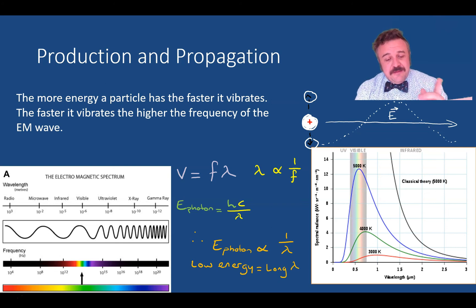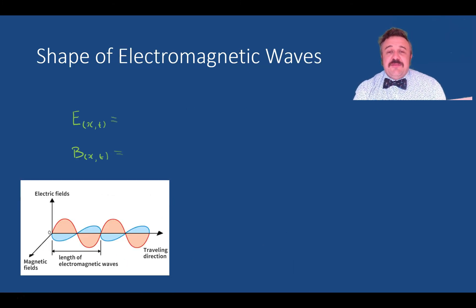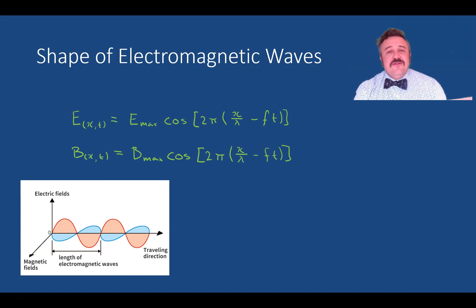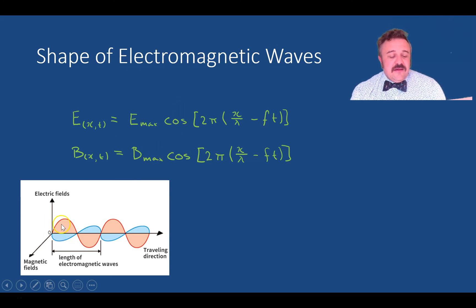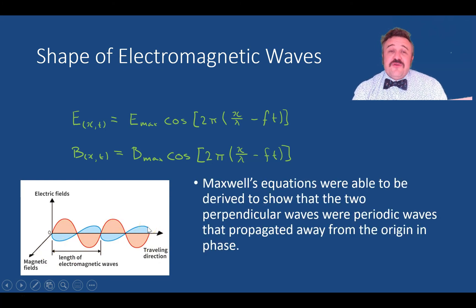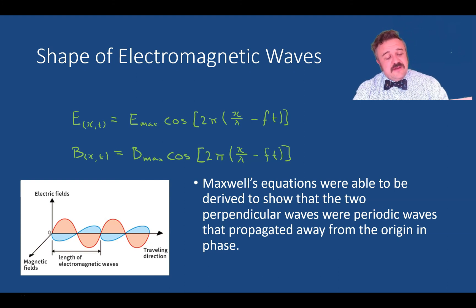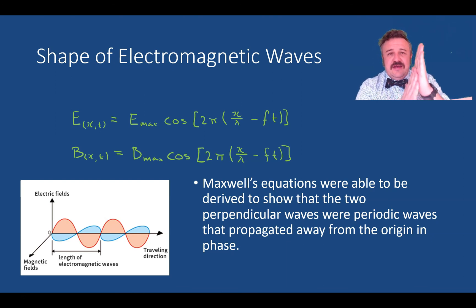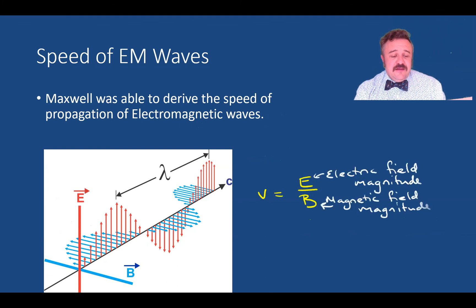We've talked about production and propagation — why it happens and how it's all related. Now, looking at the shape of electromagnetic waves: the equations describe a cosine wave — actually two of them — and those are derived from Maxwell's equations. These equations show two perpendicular waves in phase propagating away from the source of the oscillations.